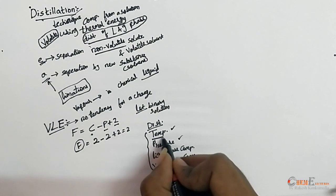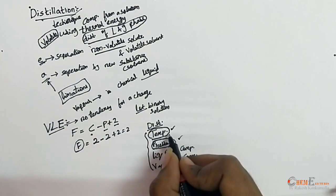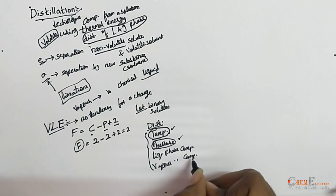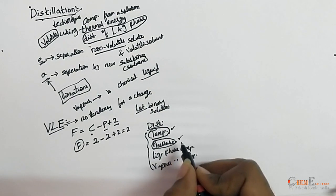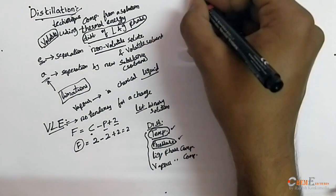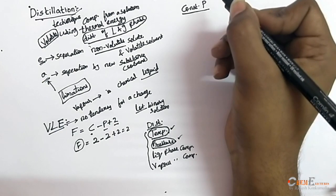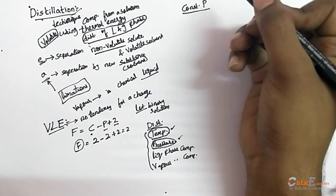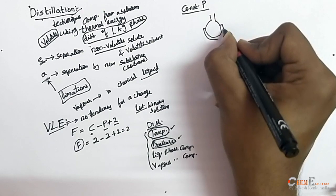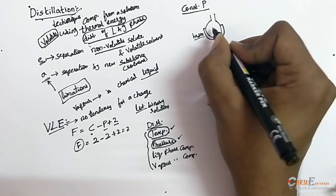If we fix any 2 of those 4 parameters, we can find the remaining ones. For example, if we fix temperature, with a change in pressure we can find liquid and vapor phase compositions. Similarly, if we fix pressure, we can find liquid and vapor phase compositions by varying temperature. Let me take a constant pressure condition with a still bath heated by a heater.